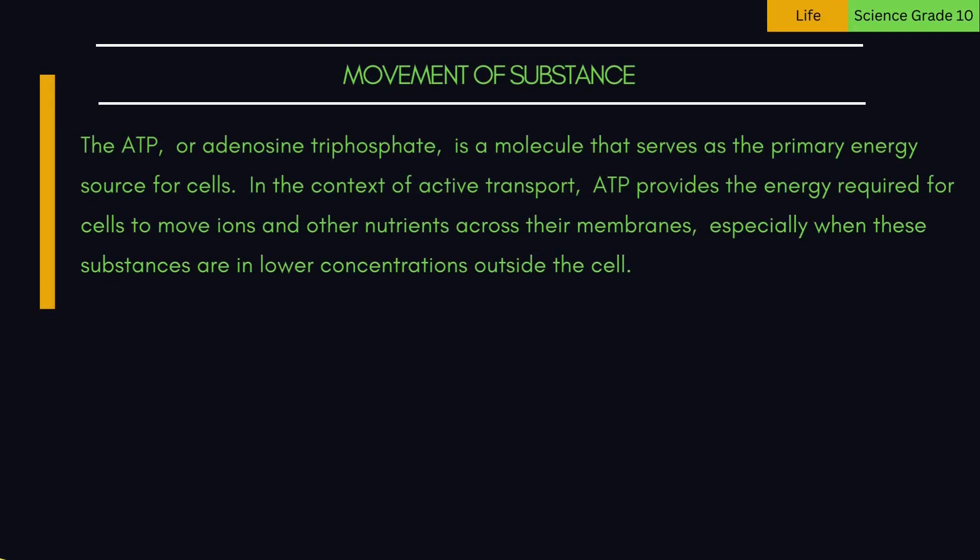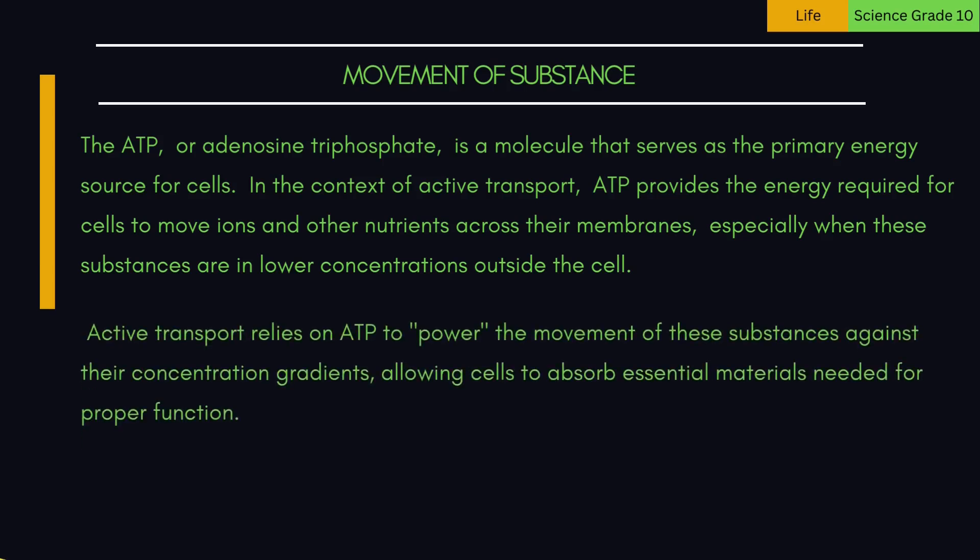ATP, or adenosine triphosphate, is a molecule that serves as the primary energy source for cells. In the context of active transport, ATP provides the energy required for cells to move ions and other nutrients across their membranes, especially when these substances are in lower concentrations outside the cell. Active transport relies on ATP to power the movement of substances against their concentration gradients, allowing cells to absorb essential materials needed for proper function.